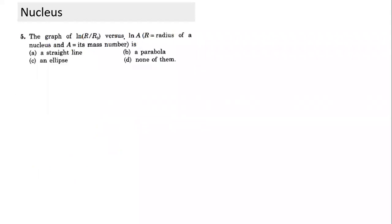There is also a graph question between R, R₀, and A. The equation relating them is R equals R₀ times A raised to power one-third. So R divided by R₀ equals A to the power one-third. Taking log of both sides, we can easily get a straight line relationship.